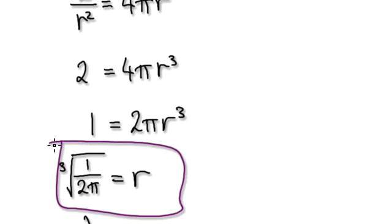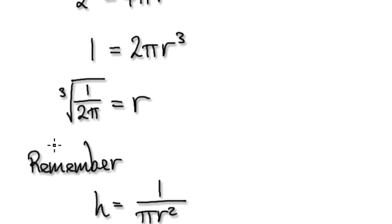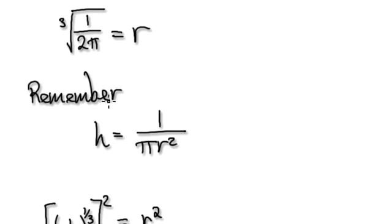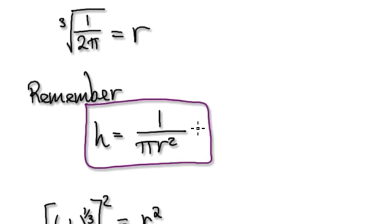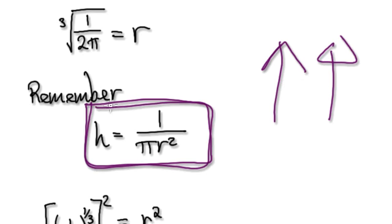So now we've got our radius. H should be quite straightforward. Remember that H is given by h = 1/(πr²) from earlier.